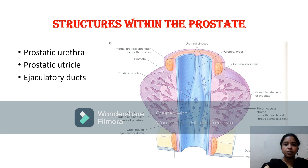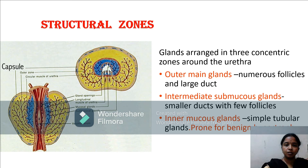The structures within the prostate include the prostatic urethra, which traverses the entire gland from base to apex, and the prostatic utricle and the ejaculatory ducts. The prostatic utricle is the homolog of the vagina in females. The structural zones of the prostate gland are divided into three zones: outer zone, intermediate zone, and inner zone. The outer zone contains large ducts and numerous follicles; the intermediate zone contains fewer smaller ducts and follicles. The innermost mucosal zone has simple tubular glands and is more prone to benign hyperplasia.